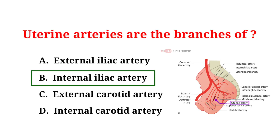Uterine arteries are the branches of the internal iliac arteries. These arteries supply the uterus and carry oxygen-rich blood to nourish the uterine tissues. Uterine arteries play a vital role in pregnancy and menstruation. Understanding their source is important in reproductive health education.